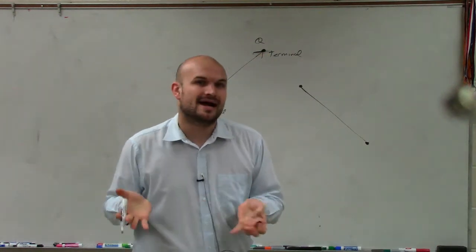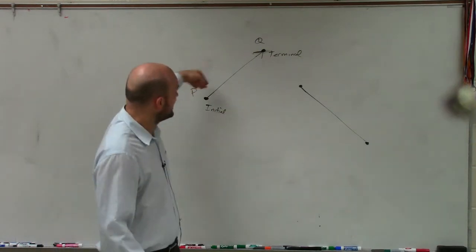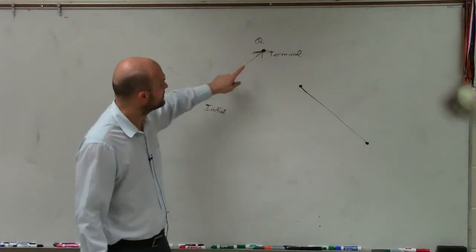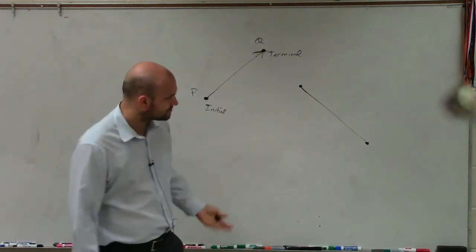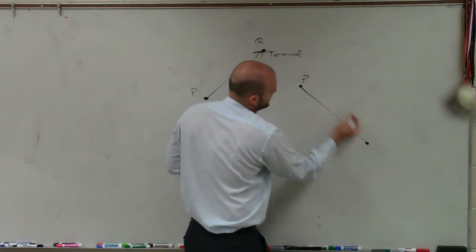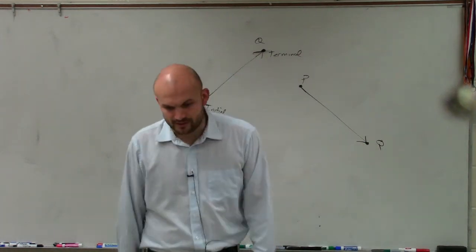So we put an arrow at our terminal point that's going to tell us this includes not only the length of this line segment, which we call the magnitude, but as well as the direction of these vectors. So let's just say that's P and that's Q.